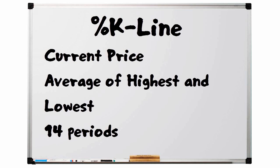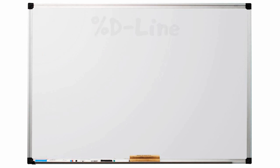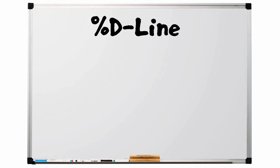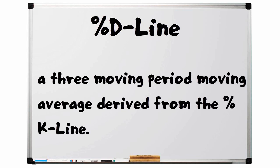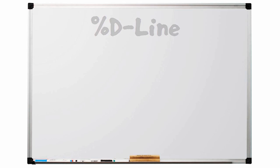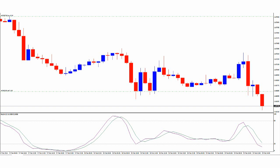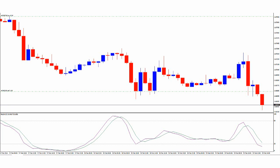The percentage K line simply shows current price compared to the average of the highest and lowest prices over the last 14 periods, and this value is plotted on the stochastic indicator as a percentage. The percentage D line is the line we follow closely as it will indicate any major signals in the chart. The D line is actually a three-period moving average derived from the K line. When the current K line is under the 20 oversold level, it simply means that the current price is below 20% of the value relative to the average of the last 14 periods' highs and lows.